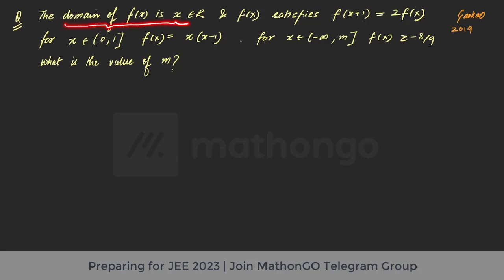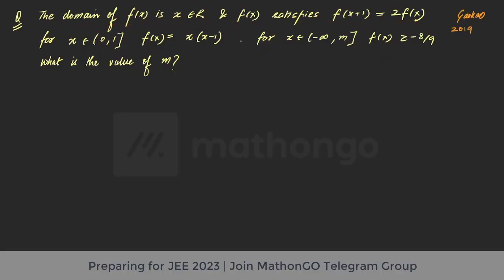The domain of f(x) is x belonging to ℝ, and f(x) satisfies f(x+1) = 2·f(x). This is a sort of functional equation, and we should make sure we understand how to utilize it. This functional equation is important — also note that f(x+1) = f(x) would mean something different.